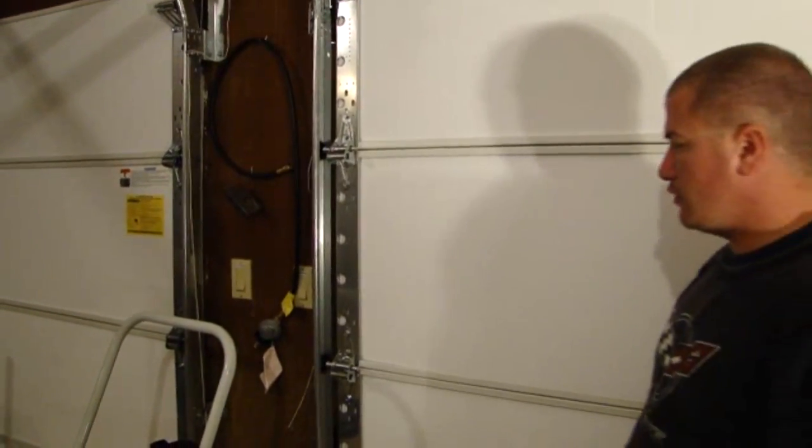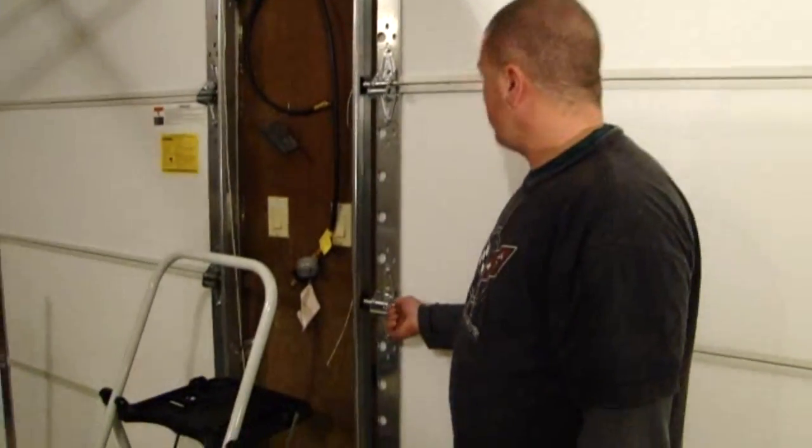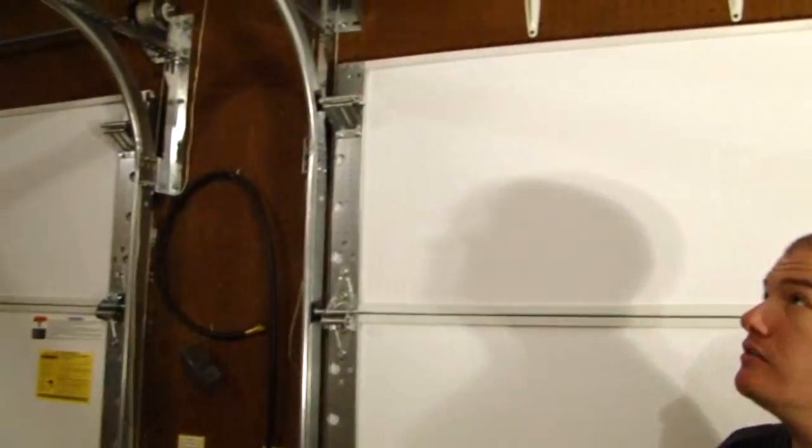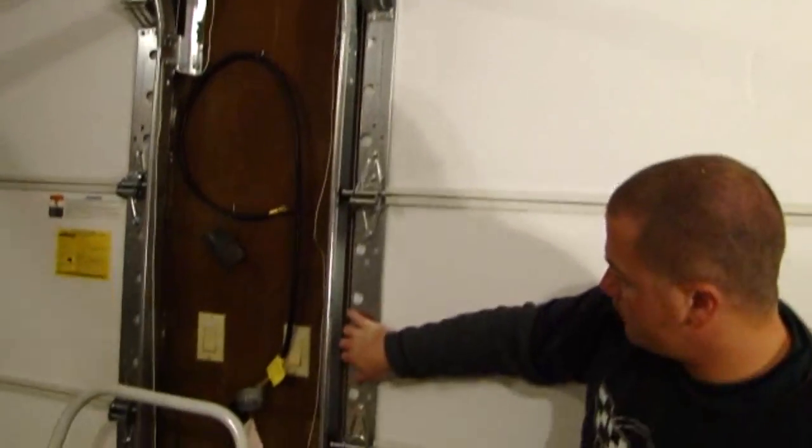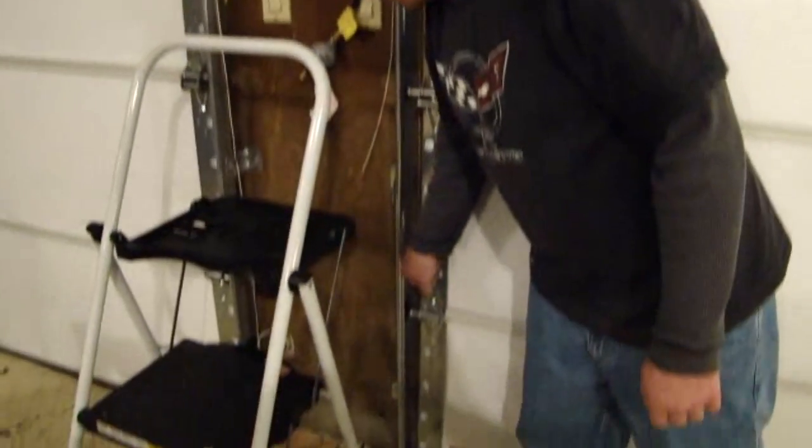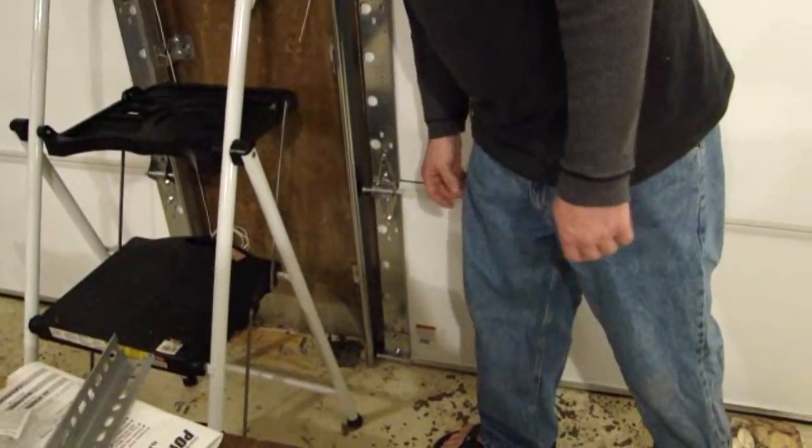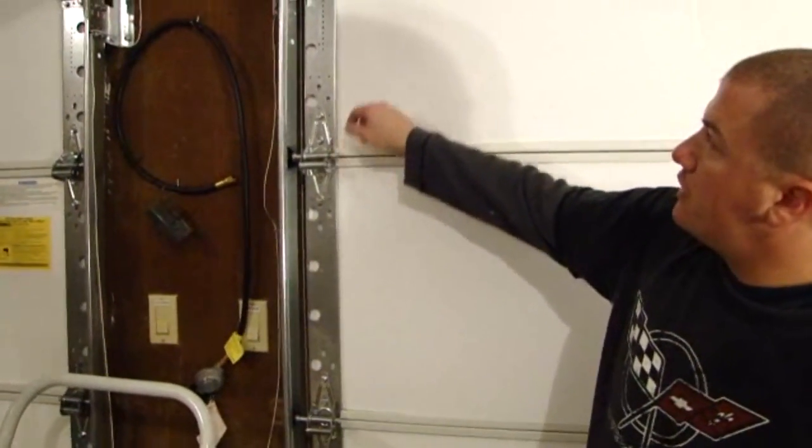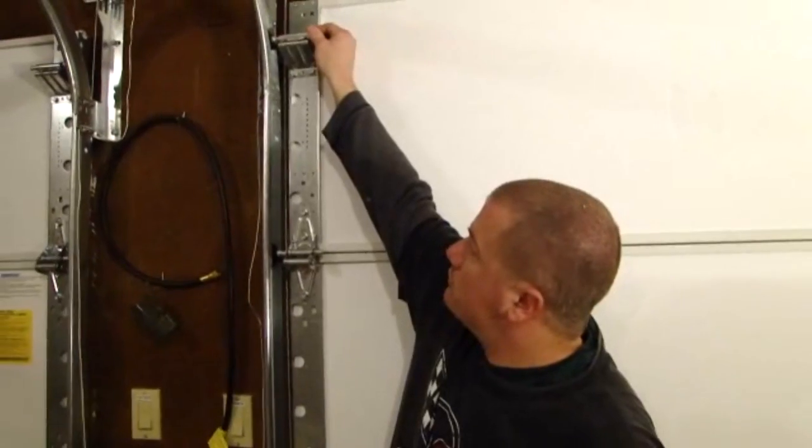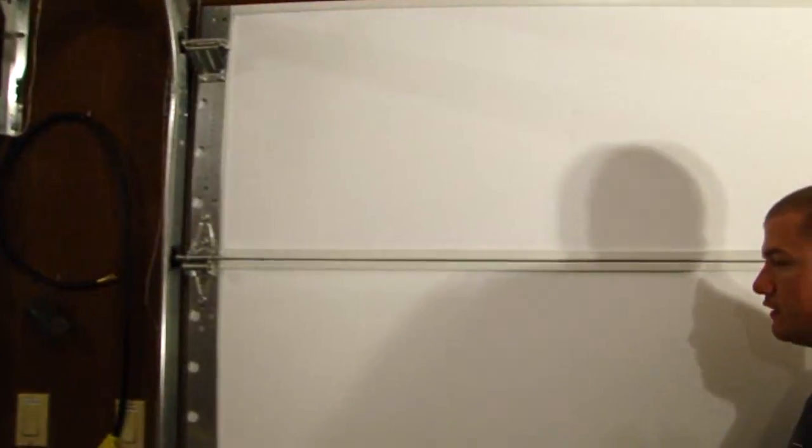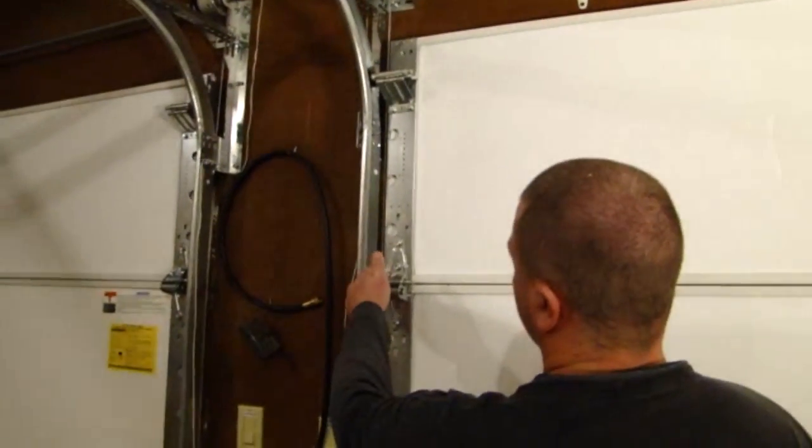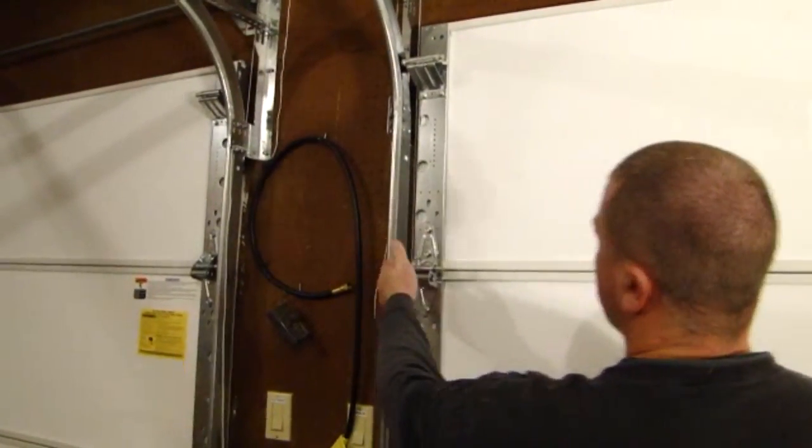Okay, I ran the door up and down several times. And what I was looking for is I'm just making sure that there's no binding. I'm making sure the door's not hitting the rail. I'm making sure the cable's not hitting the door or the rail. And then these rollers here, they're meant to go in and out to take up any variance in the track. And I'm just making sure that at no time the roller is pushed all the way against the hinge that's binding.